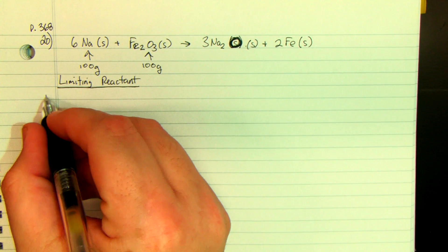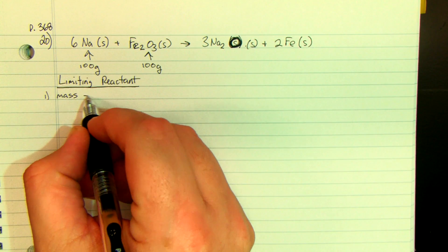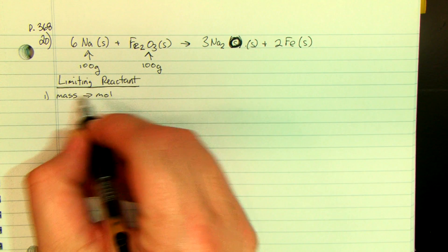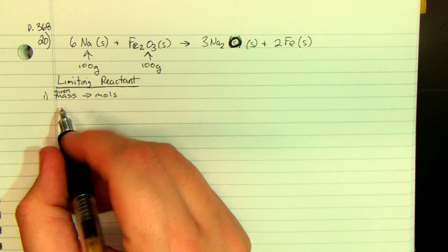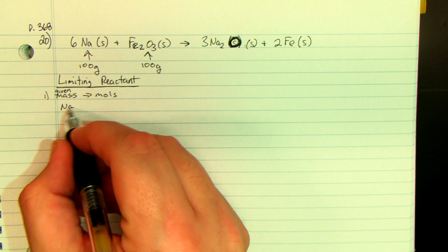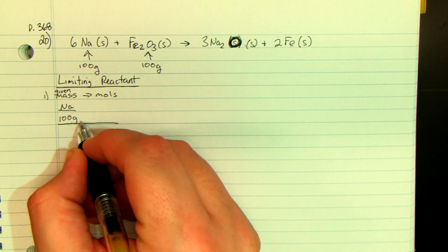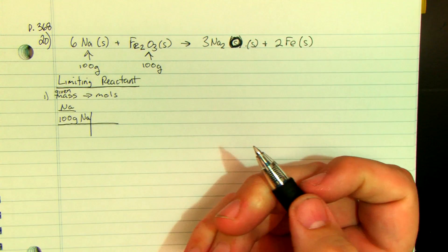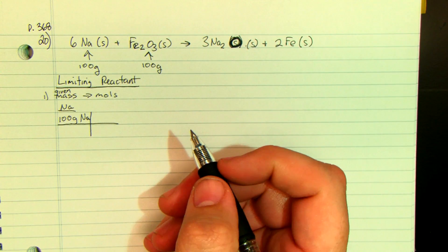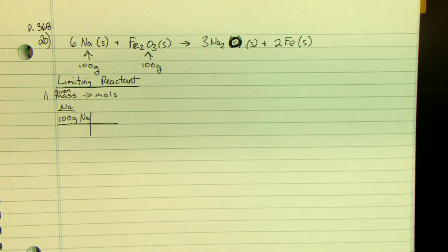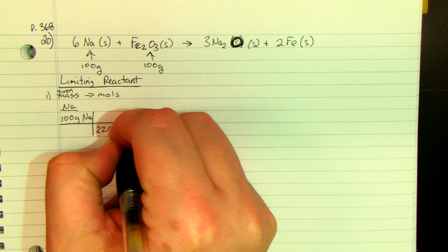The first thing we're going to do is go mass to moles — given mass to moles. For sodium, we're going to start with 100 grams of sodium. The molar mass of sodium is 22.99, so we have 22.99 grams per one mole.